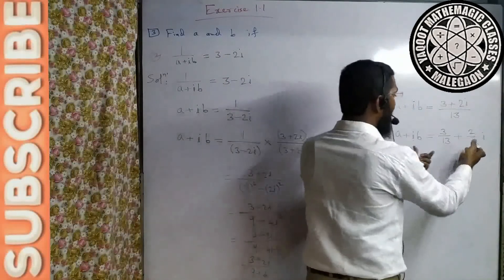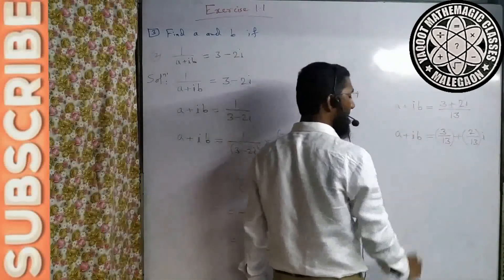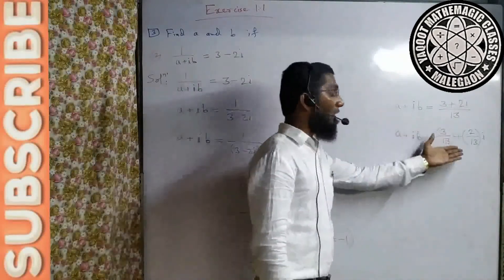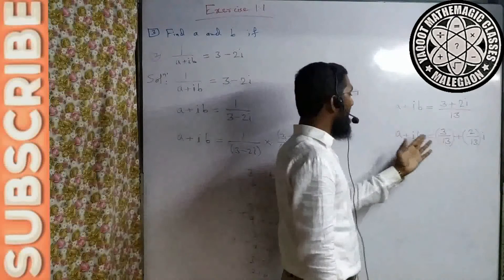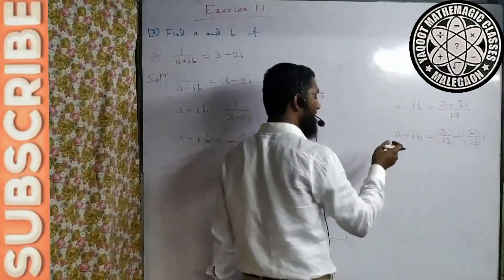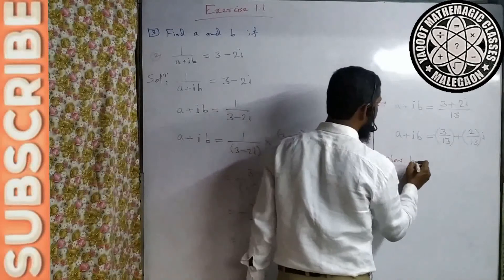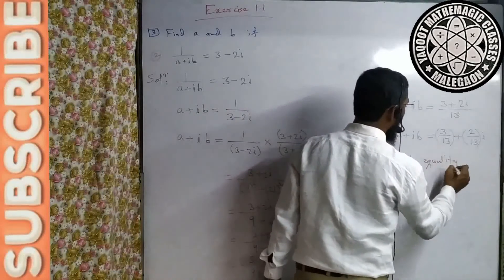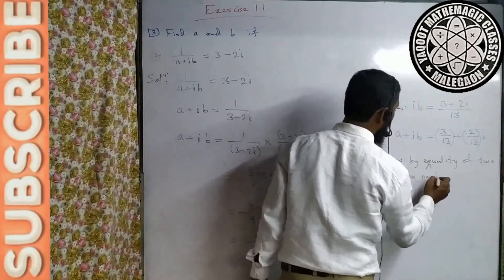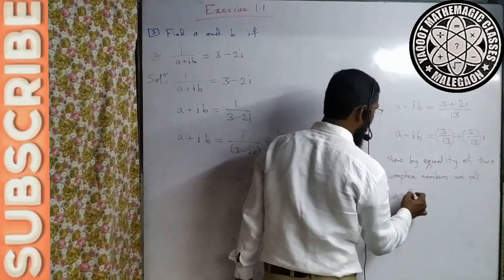Yeh complex number us complex number ke equal hai — dono mein real aur imaginary part hain. Do complex numbers equal hain, aur by equality of two complex numbers: real part real part ke equal, imaginary part imaginary part ke equal hota hai. Real part ke comparison se a milega, imaginary part ke comparison se b milega. By equality of two complex numbers, we get: real part a = 3/13.